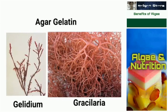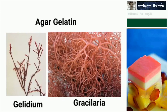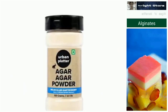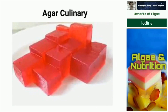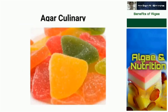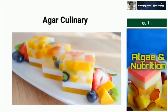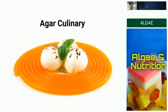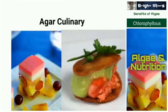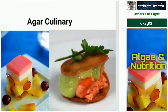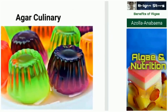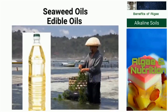Agar-agar gelatin is a highly valuable commercial product extracted from red algae like Gelidium and Gracilaria. From these, agar-agar powder is prepared and used in different kinds of culinary items — called agar culinaries — which are very colorful, attractive, appealing, and delicious. A very transparent jelly can also be made from this seaweed-derived agar.